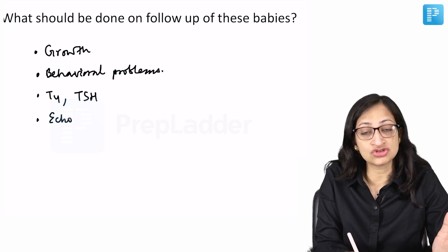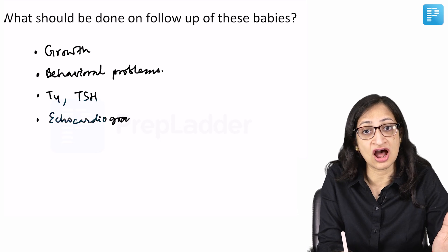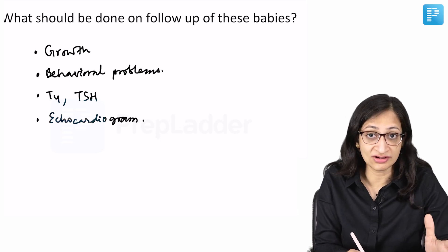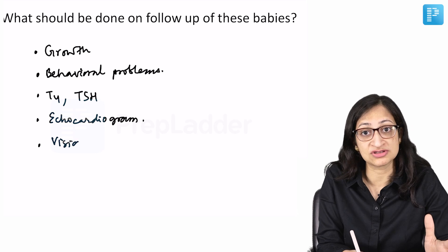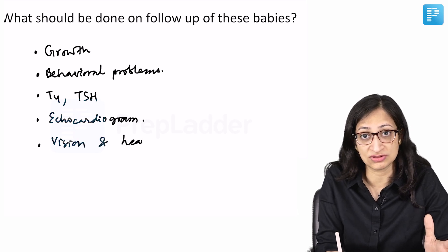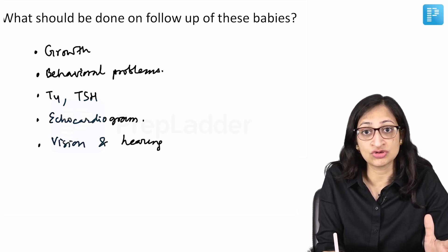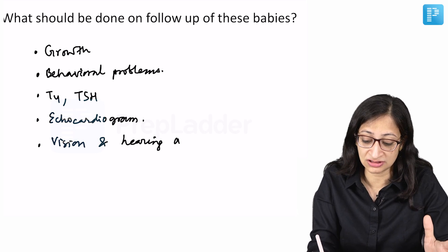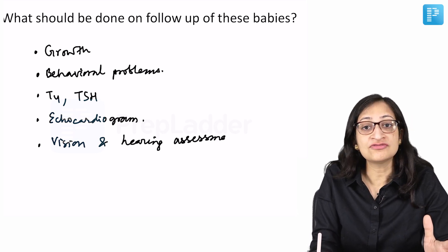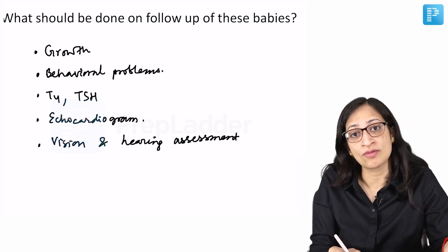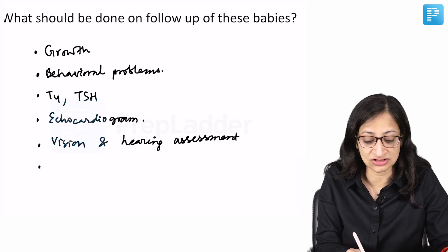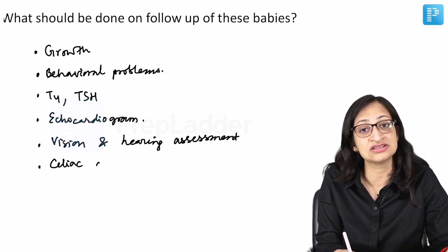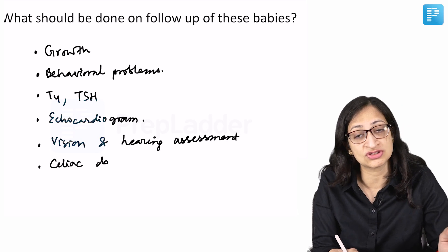An echocardiogram needs to be done at regular intervals to screen for congenital heart diseases. Vision and hearing assessment needs to be done as these are common problems in these individuals. Apart from that, you have to look for commonly associated disorders like celiac disease — so you will do anti-TTG IgA in these individuals.